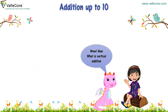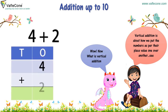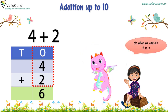Now, what is vertical addition? Vertical addition is about how we put the numbers as per their place value, one over another. See, this is 4 plus 2. Since 4 and 2 are one-digit numbers, we place them one over another and count after 4: 5, 6. So, when we add 4 plus 2, it is 6.